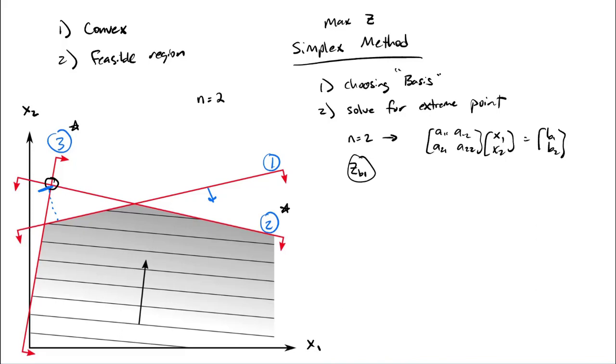So the procedure here for the simplex method is, you know, choose the basis, solve for the extreme point, 3, check the sign of the slack variables for non-basis constraints, okay? And if it's a negative slack variable value, then we treat that as infeasible and move on.